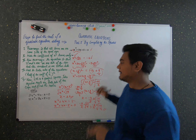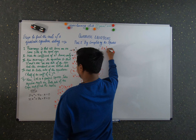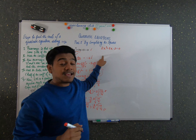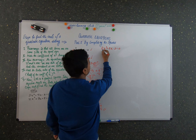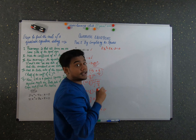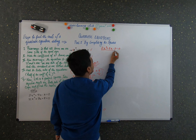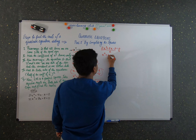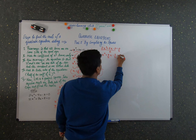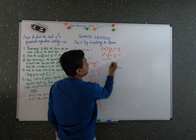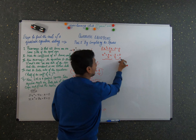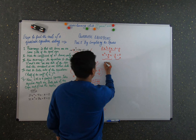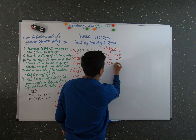Now let's start with the second problem: 2x² + 5x − 3 = 0. Step one: all terms are already on one side. Step two: the coefficient of x² is 2, not 1, so we divide the entire equation by 2, giving x² + (5/2)x − 3/2 = 0. Step three: move the constant to the other side — x² + (5/2)x = 3/2.